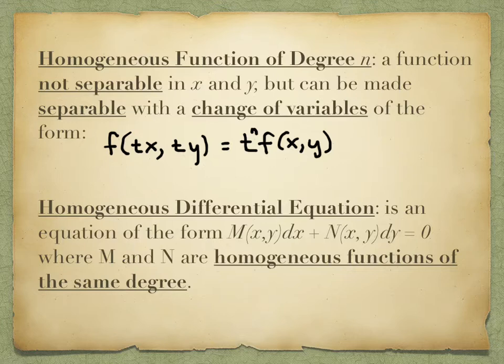A homogeneous differential equation has this particular form: some function M of x and y times dx, plus some other function N of x and y times dy, equals zero. M and N are homogeneous functions of the same degree — they have the property of being able to do this change of variable business. So if we're able to do this change of variables and get a function of this type, it's called a homogeneous differential equation.